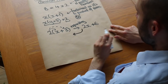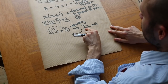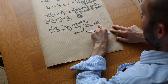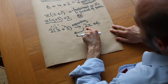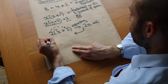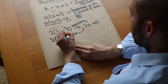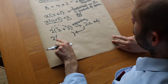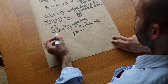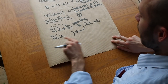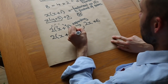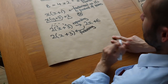To factorize 2X+6, we ask: is there anything common to both terms? They both have a factor of 2 — 2X is 2 times X, and 6 is 2 times 3. So we place the 2 outside the bracket, then ask: 2 times what gives 2X? That's X. And 2 times what gives 6? That's 3. So the factorization is 2(X+3).